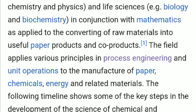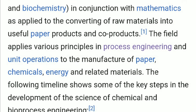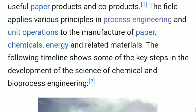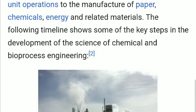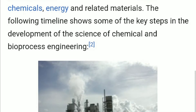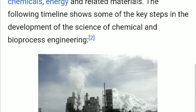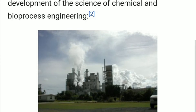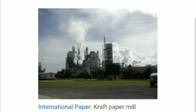The field applies various principles in process engineering and unit operations to the manufacture of paper, chemicals, energy, and related materials. The following timeline shows some of the key steps in the development of the science of chemical and bioprocess engineering.